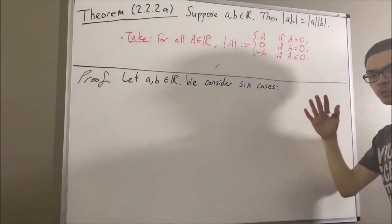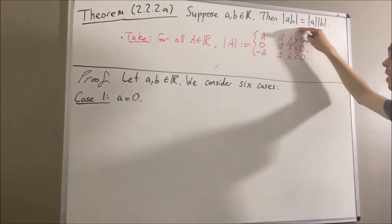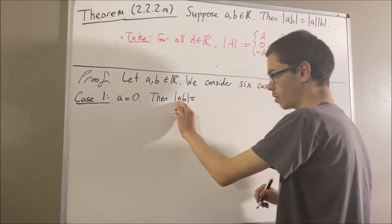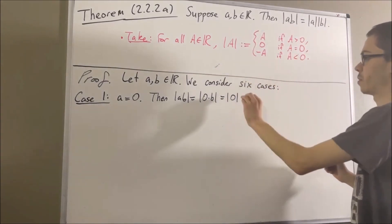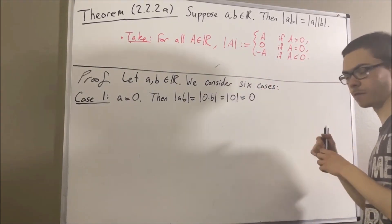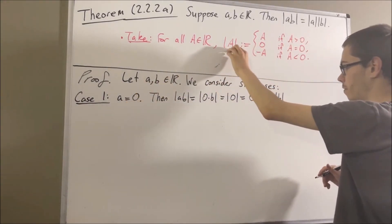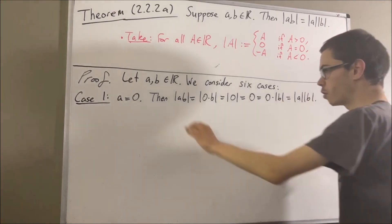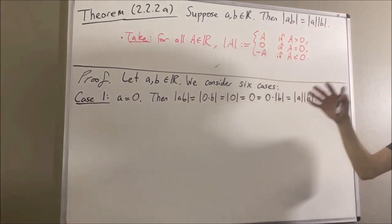The first case we're going to consider is A is equal to zero. We're going to establish a chain of equalities showing that these two are equal. Since A is equal to zero, we can replace the A here with zero. We know that zero times B is equal to zero. By definition of absolute value, the absolute value of zero is equal to zero. We know that zero is equal to zero times the absolute value of B. And since A is equal to zero, by definition of absolute value the absolute value of A is equal to zero, so we can replace the zero here with absolute value of A. This completes the case where A is equal to zero.